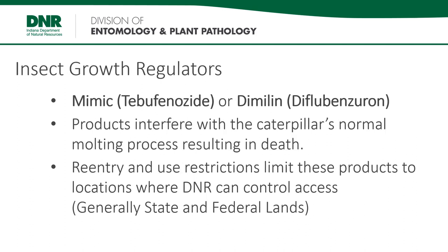Caterpillars grow by shedding their skin in a process called molting. Insect growth regulators are insect hormones that interfere with the normal molting process, resulting in the insect's death. Mimic and Dimulin have reentry requirements and other restrictions that limit them to use in specific circumstances — they would typically be used where the DNR can control access to the treatment areas, such as state and federal lands or areas with a handful of closely cooperating landowners.